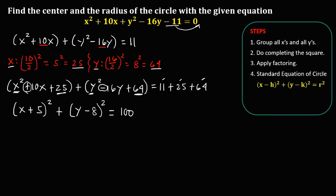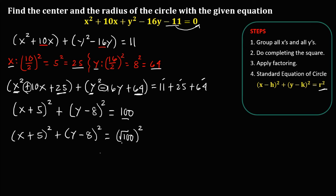From the standard equation of the circle, since we have r squared, we need to rewrite 100 with an exponent of 2. So we take the square root of 100 and raise it to the power of 2. Simplifying, we have x plus 5 squared, plus y minus 8 squared, equals 10 squared. This is now the standard equation of the circle.